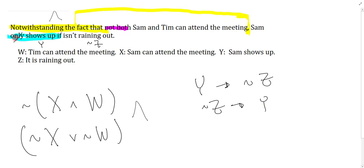I can block out the only, and it says Sam shows up if it isn't raining out, so that would be if it isn't raining out then Sam shows up—that's this one. But with the only, I actually end up crossing this one off and it's got to be this one.